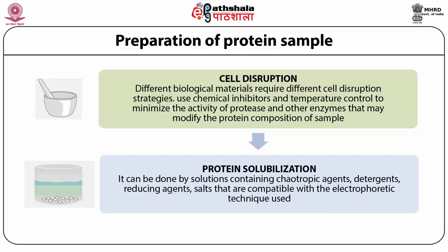For the procedure, clean all gel plates, spacers and comb. Remove any fingerprints or other residue from the glass plates with 70% ethanol. Ensure that all components are dry before starting the experiment. Prepare the polymerization mixture and fill the glass plate assembly with this mixture, avoiding bubble formation. Insert a well-forming comb immediately and allow the gel to polymerize for at least two hours. Care must be taken about bubble formation during gel casting, since bubbles do not conduct electrical current and they interfere with electrophoretic movement.